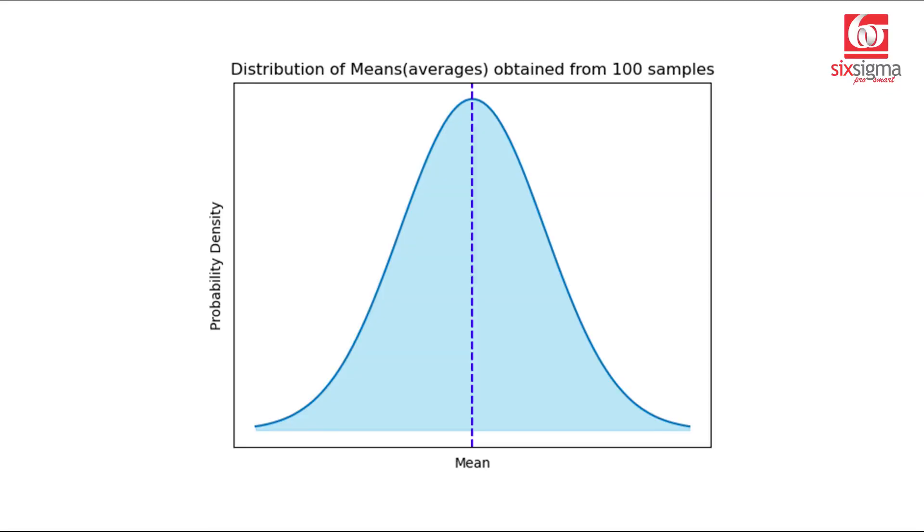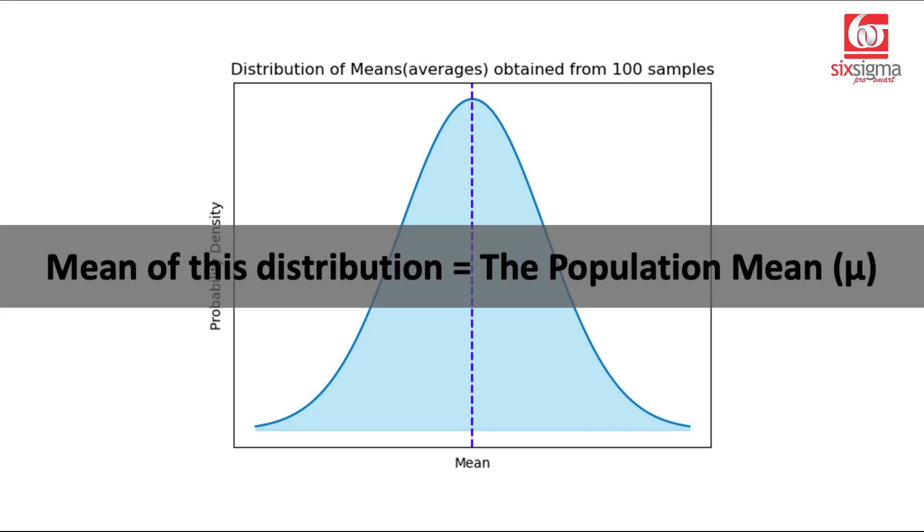But we know a normal distribution is characterized by its mean and standard deviation. Can we say something about that too? Well, yes, of course. Central limit theorem says that the mean of this distribution of the averages that you've taken for each of these 100 samples would be coinciding with the parent population's mean.